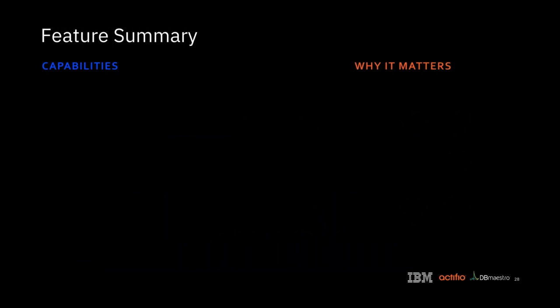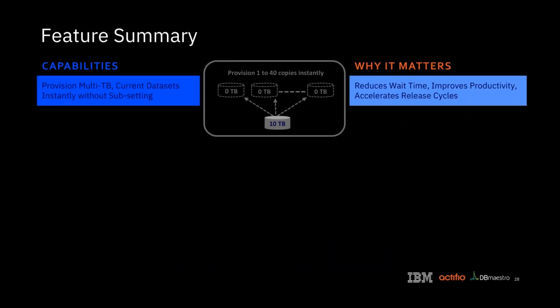To summarize: we can provision multi-terabyte data sets instantly. It's not uncommon for us to meet customers who are waiting days, weeks, or even months to get copies of databases. We can provide these databases instantly and not only provide the native databases themselves, but instantly refresh them on demand. Using tools like Urban Code and DB Maestro, it's all automated, and we can roll it forward to make sure our DB schema matches the newest version we're working on. It's very efficient from a space standpoint — no additional disk space — and allows for more efficient parallel testing, since all developers can have their own database and develop in parallel.